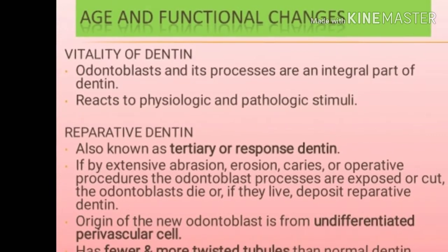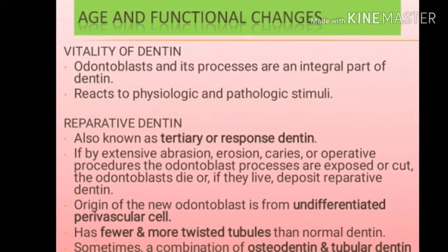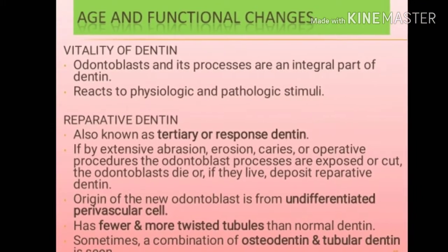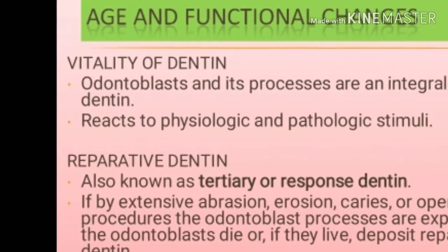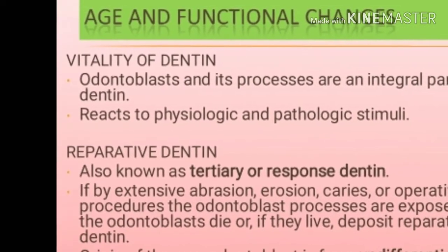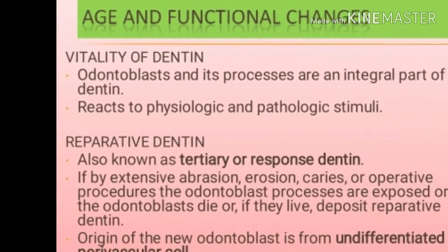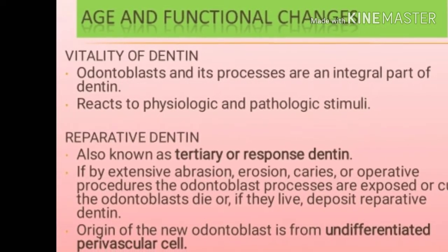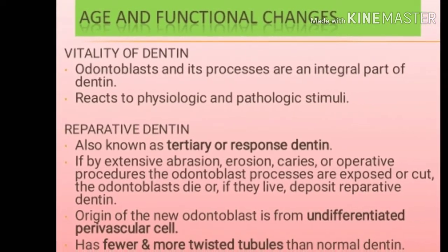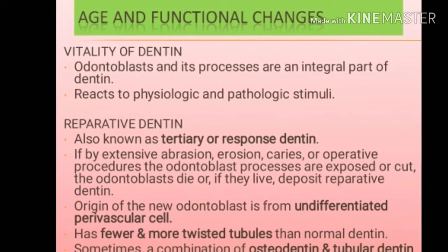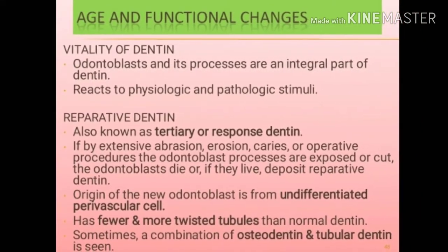Reparative dentine, also known as tertiary or response dentine, forms when, by extensive abrasion, erosion, caries, or operative procedure, the odontoblast processes are exposed or cut. The odontoblasts die, or if they live, they deposit reparative dentine. The origin of new odontoblasts is from undifferentiated perivascular cells. Reparative dentine has fewer and more twisted tubules than normal dentine, and sometimes a combination of osteodentine and tubular dentine is seen. Odontoblasts lay down 1.4 micrometers per day.